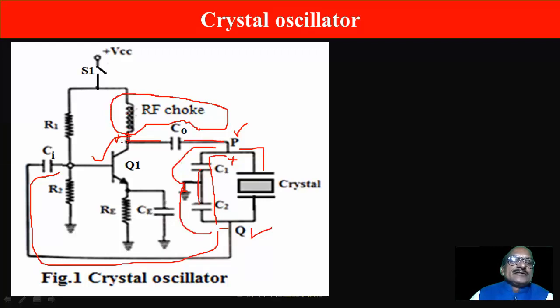If here at the collector we are producing the high frequency oscillations in amplified form, and if there is no inductor or RF choke, what will happen? This AC voltage will go to the battery and it will short.